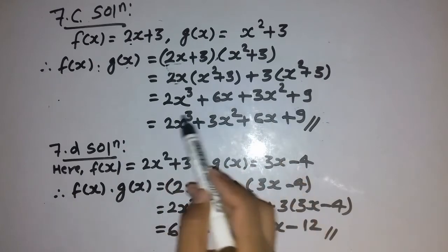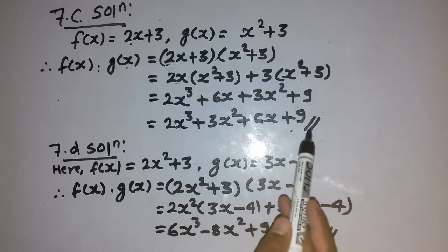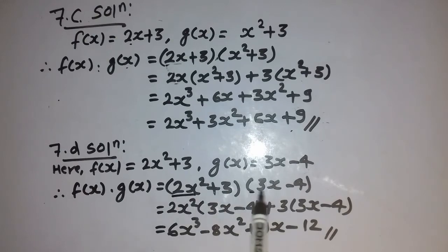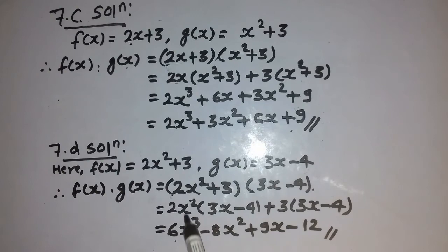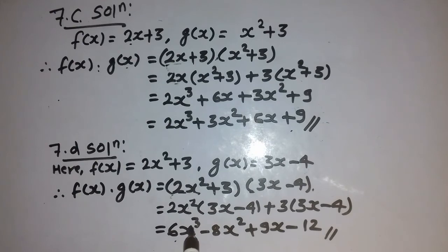There are no like terms, so we have arranged the terms from higher power to lower power: x to the power 3, power 2, power 1, then power 0. In question number 7d, these two polynomials f(x) and g(x) are given. We multiply this with the first term, then with plus 3 again. So 2 times 3 is 6, power 2 plus 1 is 3, and minus 2 times 4 is 8, then x squared as it is, then plus 3 times 3 is 9, x as it is, then minus 3 times 4 is 12. There are no like terms and the powers are in order from higher to lower.